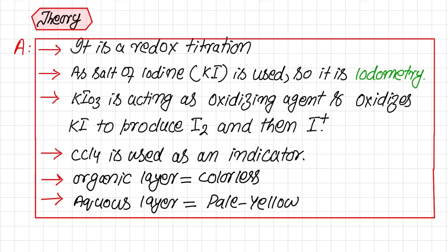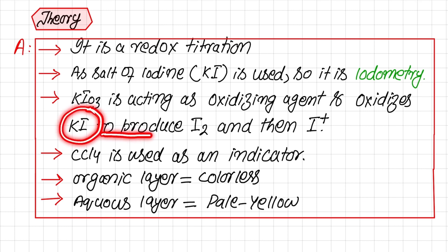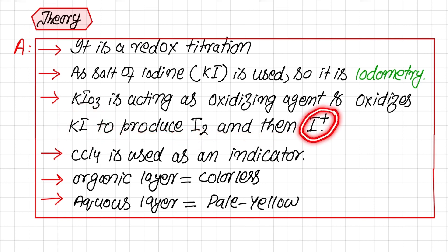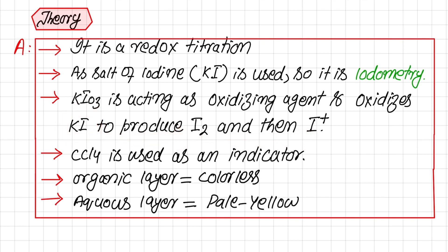As it is a redox titration, potassium iodate is acting as the oxidizing agent. It first oxidizes potassium iodide, converting it to iodine in neutral form, and then this iodine is further oxidized to form its final product, which is I-positive (I+). In this way, potassium iodate oxidizes the potassium iodide analyte.